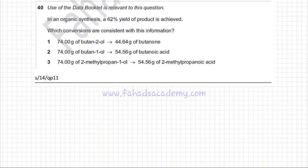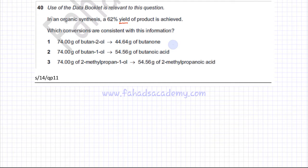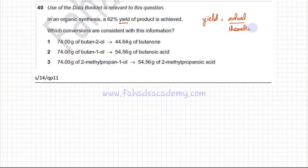In this question there is an organic synthesis where a 62% yield of product has been achieved. We need to discuss what yield is. The formula for yield is: yield equals the actual or experimental value divided by the theoretical value, multiplied by 100. This gives us the percentage yield.